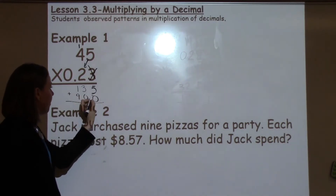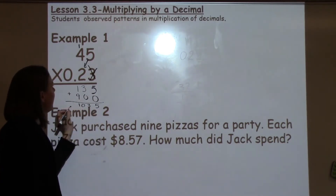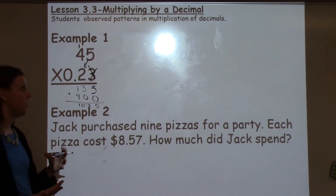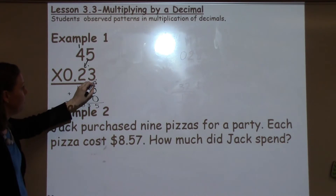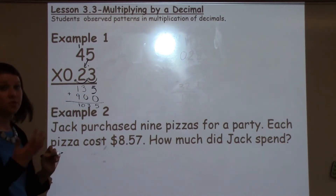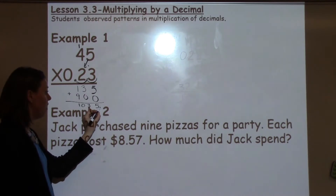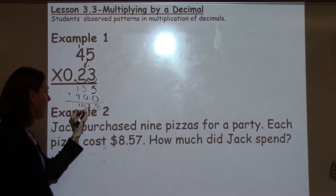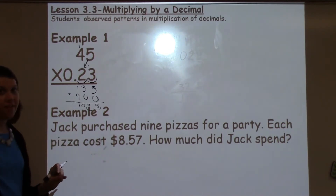Go ahead and add these together as normal: 5, 3, and then 10. Then we tell our students to go back and look for the decimal. I go to the very end of my number and count how many hops we have to go: 1, 2. So we had to hop in 2 times. We need to move over 2 spots in our answer, hopping over 1, 2 spots, which makes my answer 10 and 35 hundredths.